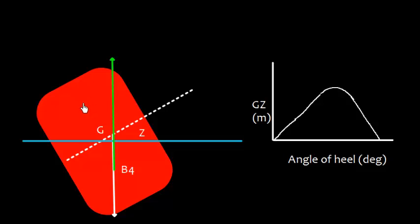Now if the vessel heels further at this position, here the B4, that is center of buoyancy, has come directly below G, so the GZ is zero here.